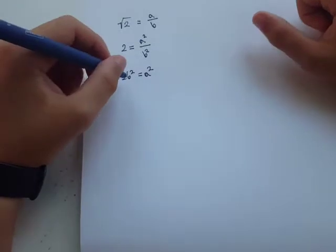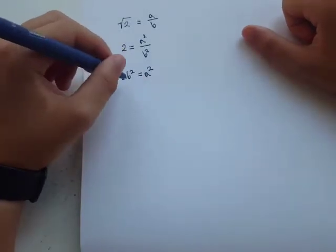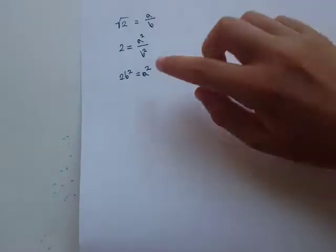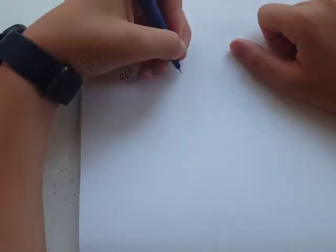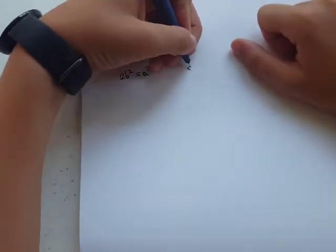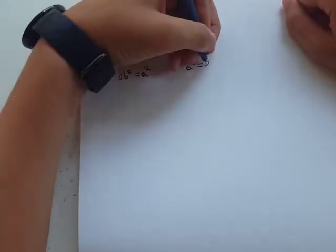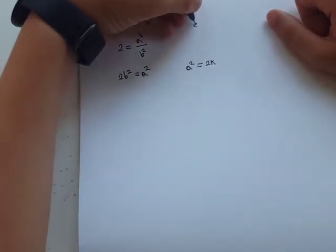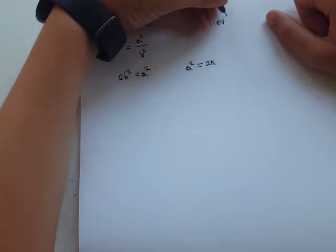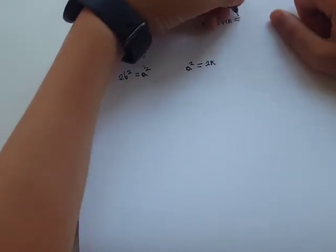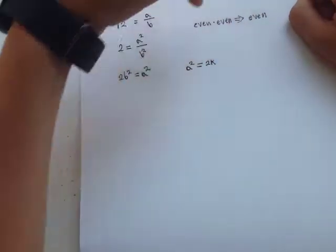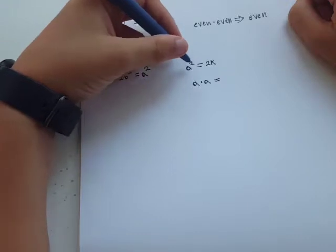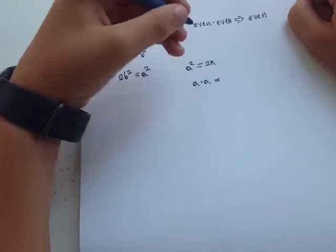Now, a squared must be even because a squared is 2 times an integer b squared. Let's rename this integer k. So a squared is equal to 2 times some integer. So it's even. And we know that even times even makes an even number. So a times a must be an even number. So a is even.